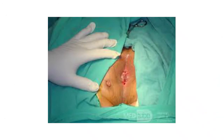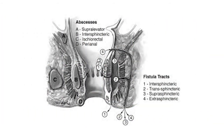Here is a typical picture of fistula in ano showing the external opening (secondary opening) with hypergranulation on the perianal skin clearly visible. A schematic diagram shows the sites of abscesses: A (supraelevator), B (intersphincteric), C (ischio-rectal abscess), D (perianal); and on the left side the fistula tract types: 1 (intersphincteric), 2 (transphincteric), 3 (suprasphincteric), and 4 (extrasphincteric).